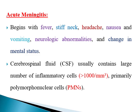When you examine the CSF, or the cerebrospinal fluid, in acute meningitis, you will find a large number of inflammatory cells — more than 1,000 cells per cubic millimeter — and they are formed mainly of polymorphonuclear cells, or pus cells.